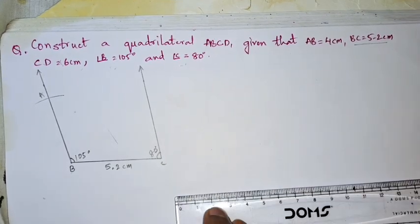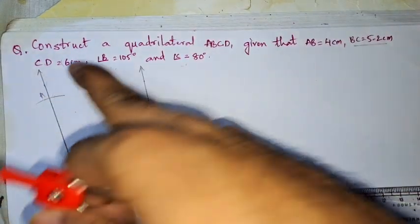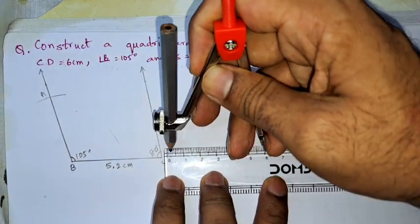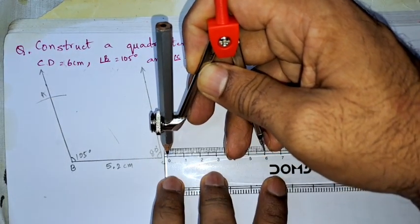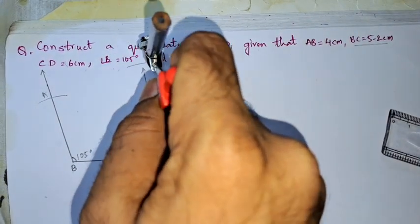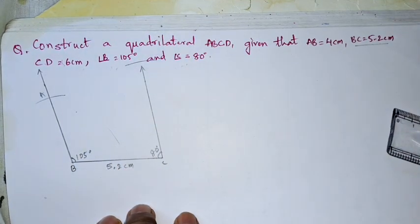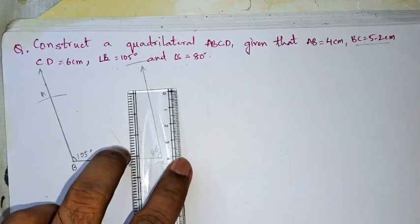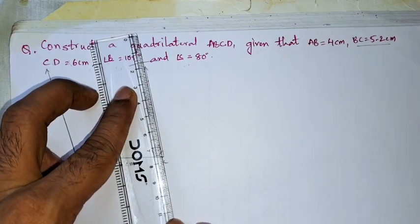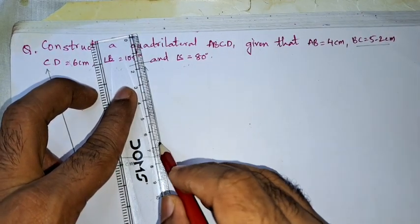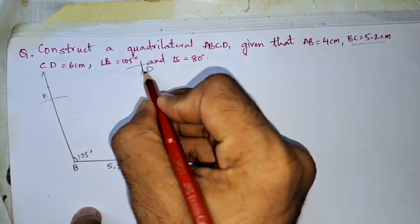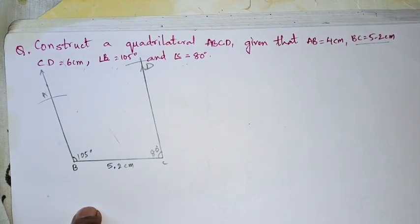Now we are having CD. CD is 6 centimeter, so let us take the radius as 6 centimeter. We will cut this. As you can see it is not getting cut so we will extend this line, the ray which we drew. We will extend it so that it will meet the arc. Now we got this point D. Let us join them.